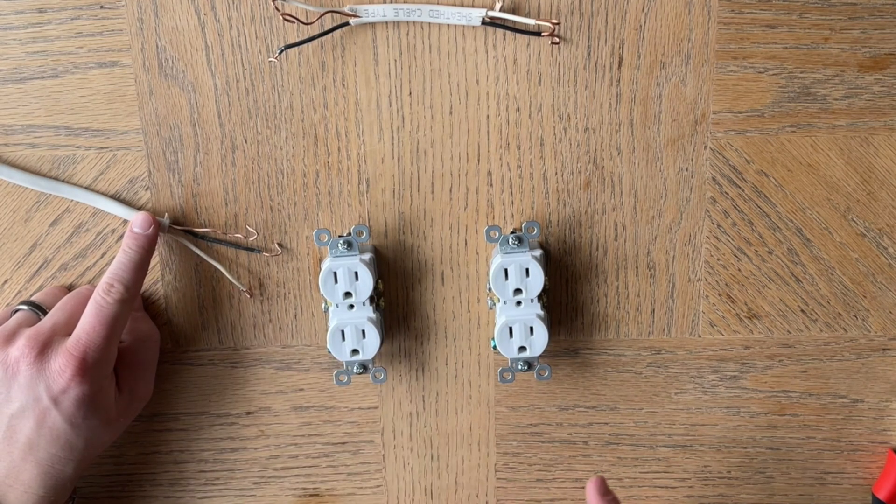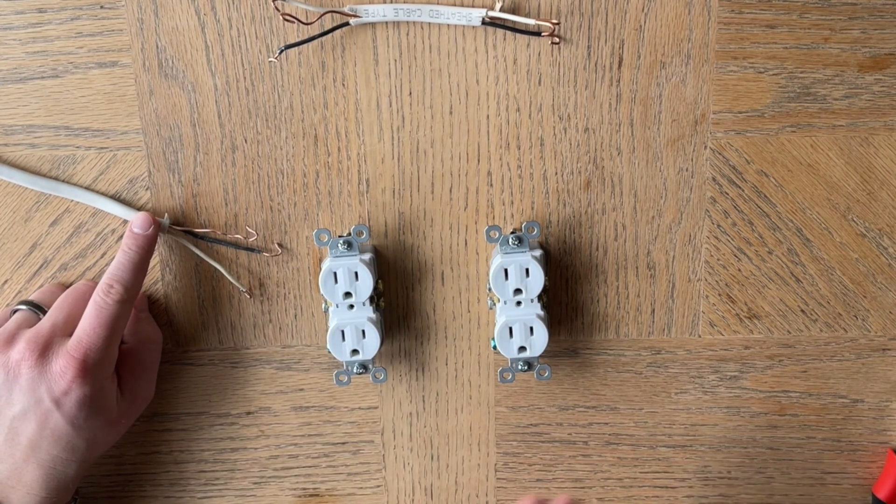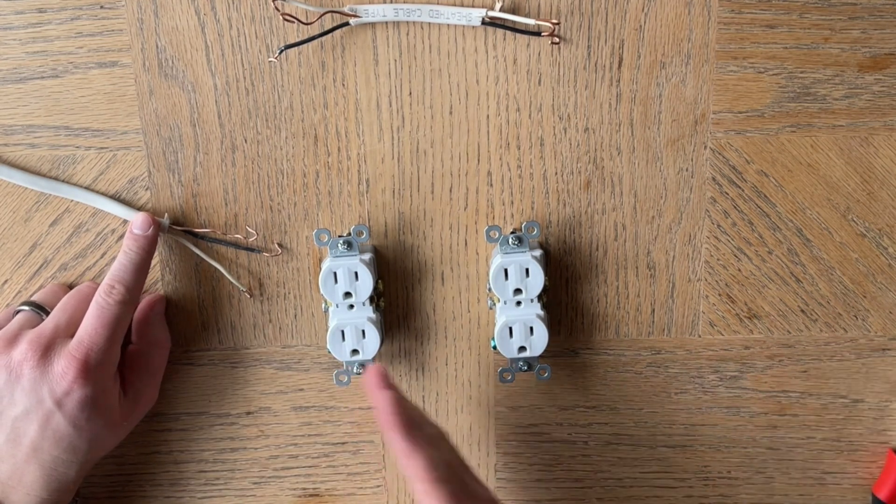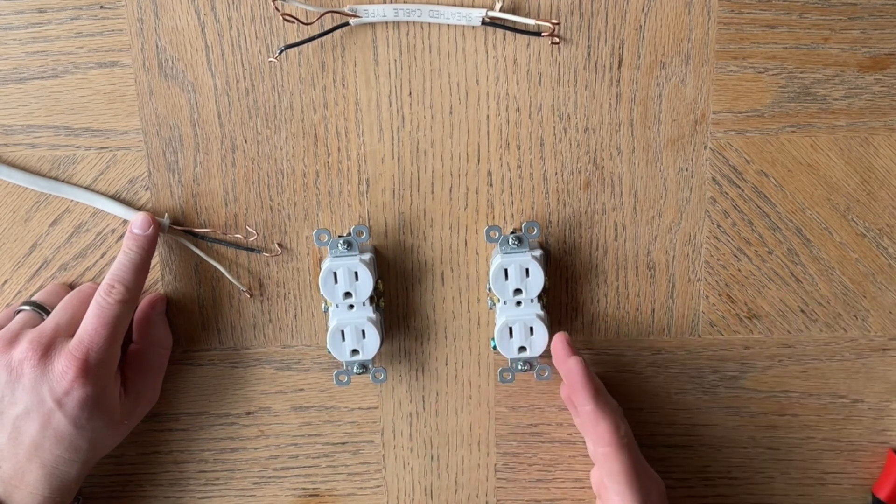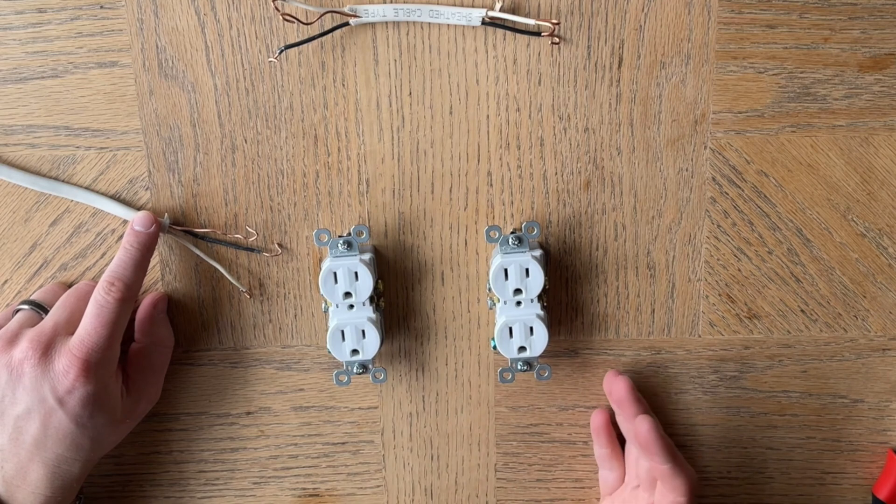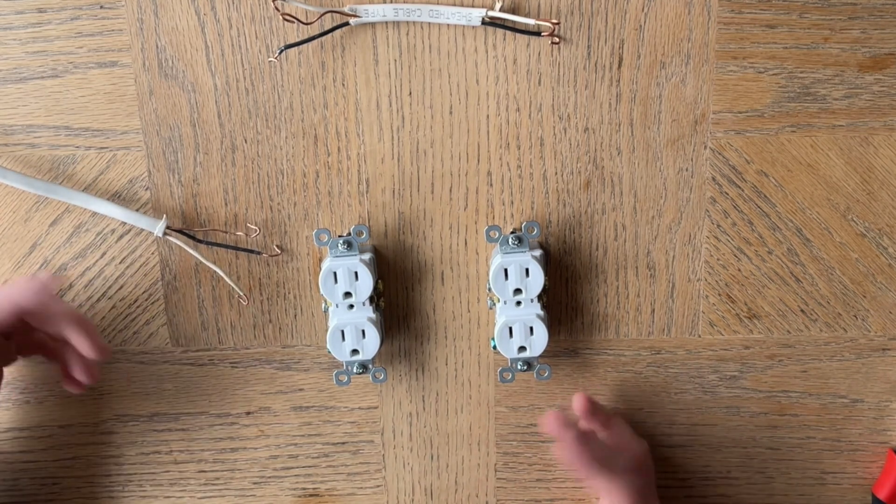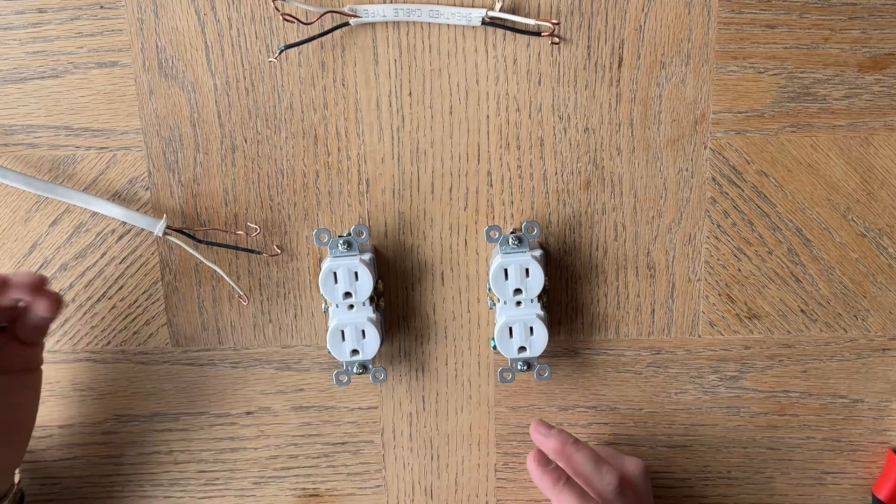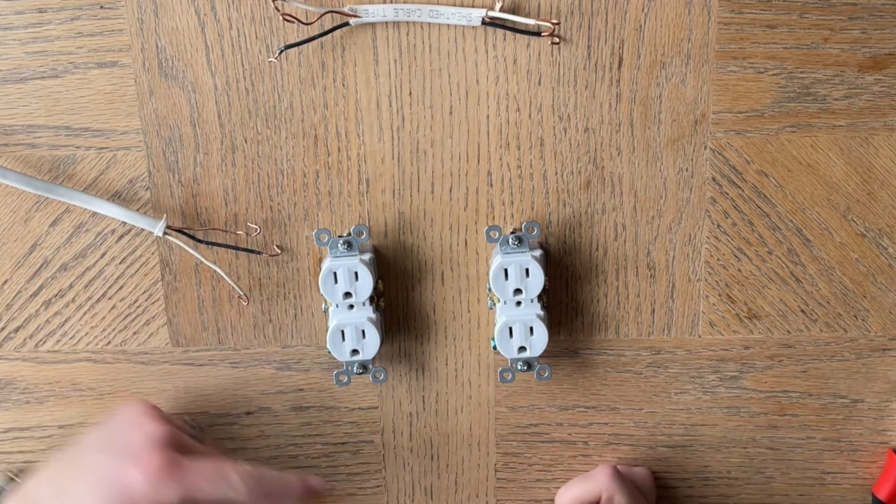Now of course you need to be careful if you have multiple in a series. Each time you get further down, the power is reduced, not significantly, but it's like a 50-foot extension cord versus a 10-foot. There's more power when you plug something into a 10-foot because it doesn't have all that far to travel.